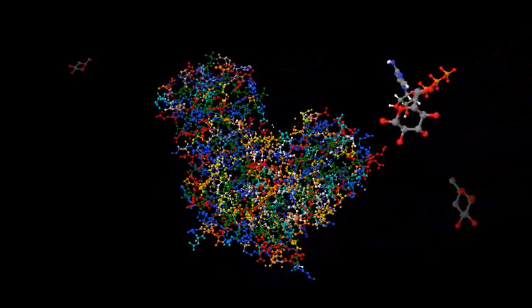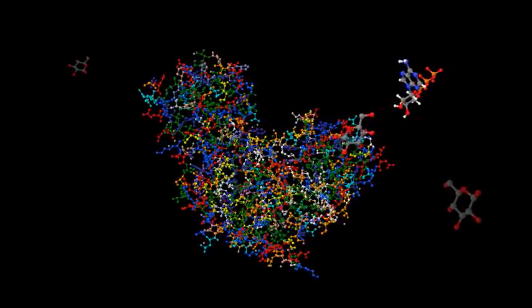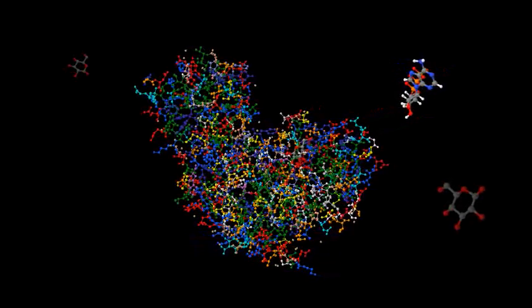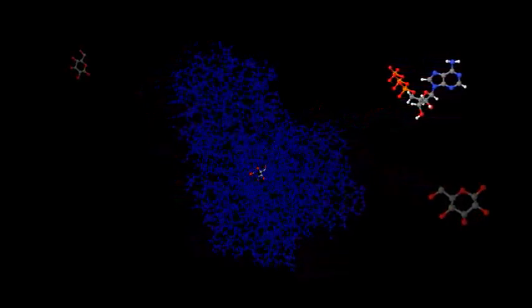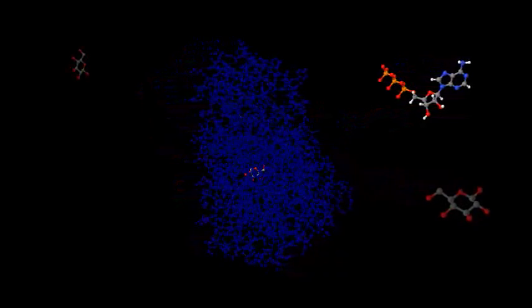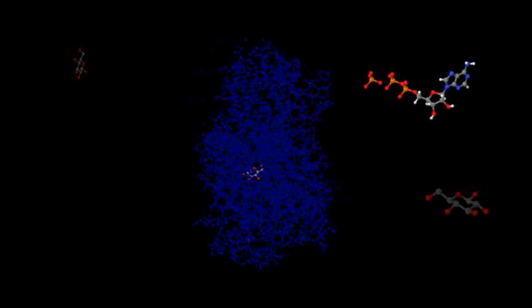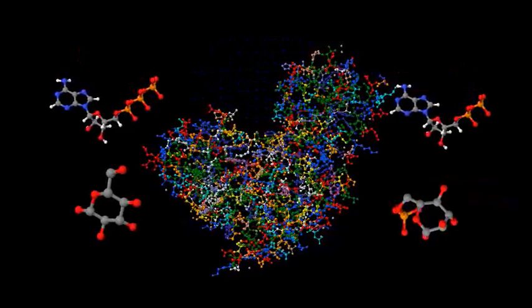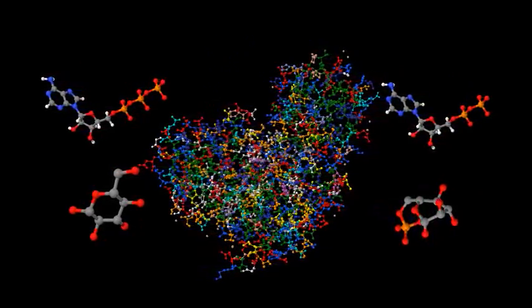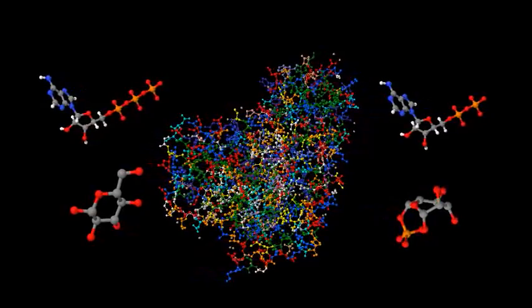Hexokinase captures a glucose molecule in its active site and holds it in just the right orientation, like a robot arm might do in an automobile assembly line. It then takes the last phosphate group from an ATP molecule and attaches it to the glucose. Glucose and ATP go in, and glucose 6-phosphate and ADP come out.